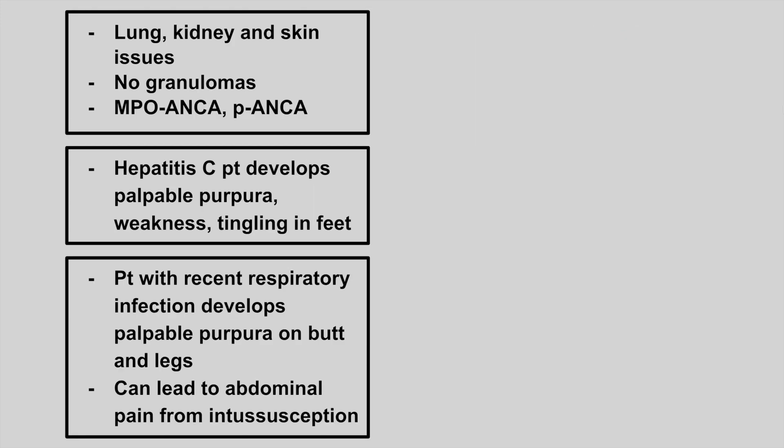The next patient has lung issues, kidney issues, and skin issues — no granulomas — but it is MPO-ANCA and P-ANCA positive. So this is microscopic polyangiitis. Remember, the antibodies are the same as in eosinophilic granulomatosis, but there are no eosinophils or asthma.